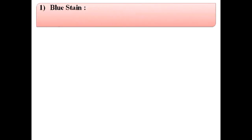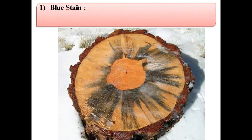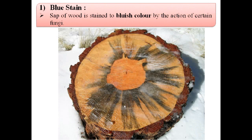First defect due to fungi is blue stain. In this image we can see the sap of this wood is stained to a bluish color by the action of certain fungi. So it is known as blue stain.